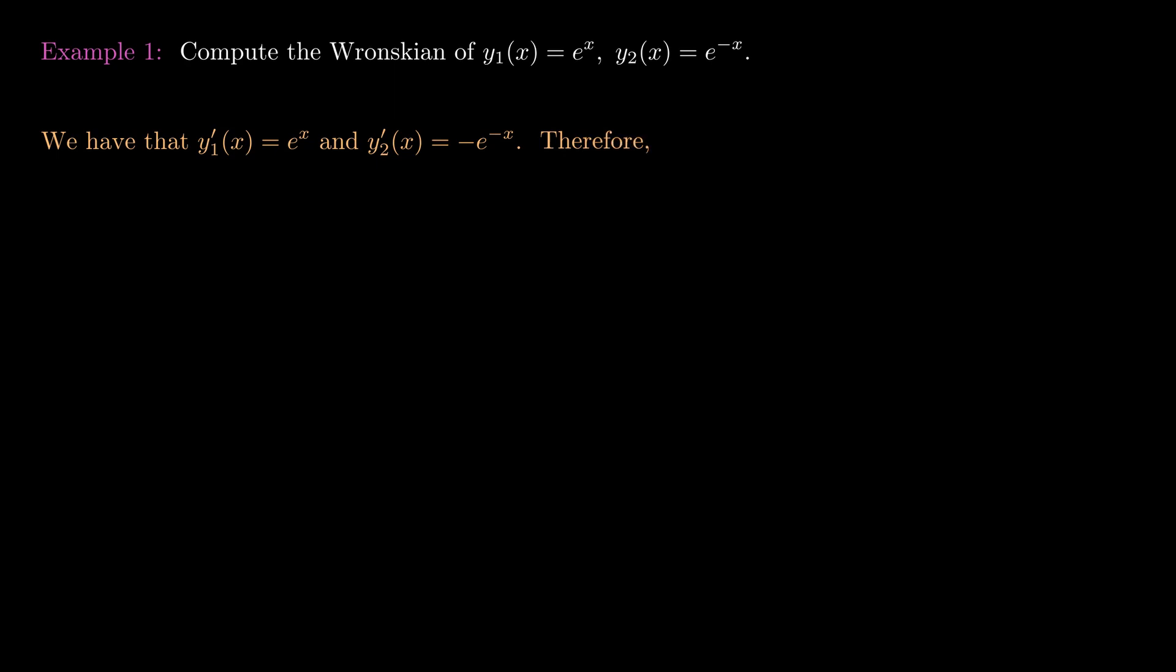And therefore the Wronskian matrix, which again is just y1, y1 prime, y2, y2 prime, is the determinant of e^x, e^(-x), e^x, minus e^(-x).